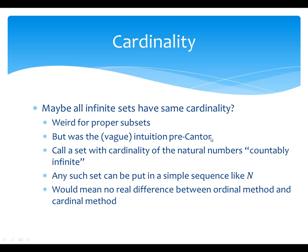If you look pre-Cantor, nobody was talking about different kinds of infinity. They didn't want to think about infinity as an object of study at all, and so they didn't have a notion of different cardinalities. Let's establish a little terminology: a set with the cardinality of the natural numbers is called countably infinite. It's definitely an infinite set, but it's countable — it can be put in correspondence with our simplest example of an infinite set, the natural numbers.